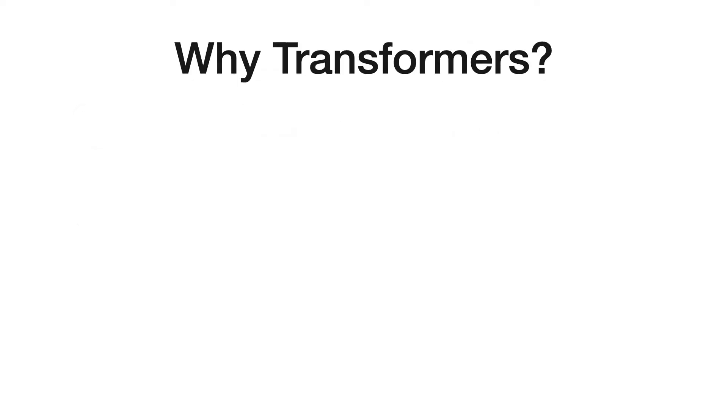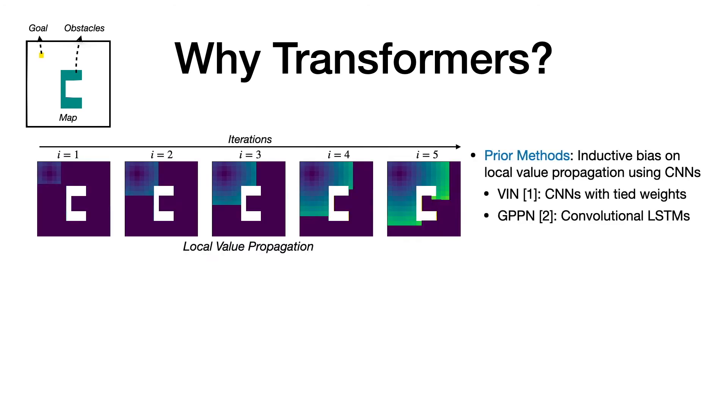Prior methods for spatial planning use iterative local convolutional operations in a learned planner inspired by the classical value iteration algorithm. Convolutional operations only allow local value propagation within each iteration.